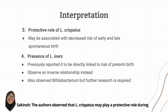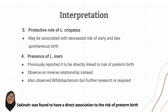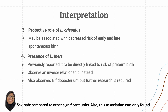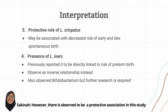The authors observed that L. crispatus may play a protective role during early gestation, whereby this bacteria decreases the risk of spontaneous early and late preterm birth, supported by previous studies. On the other hand, L. inus was found in previous studies to have a direct association with the risk of preterm birth; however, in this study the relationship was found to be inverse rather than direct. This association was only found specific to women with early spontaneous preterm birth, less than 34 weeks. Regarding Bifidobacterium, previous meta-analyses had not observed any association with pregnancy outcomes, but this study observed a protective association, though further research needs to be done.